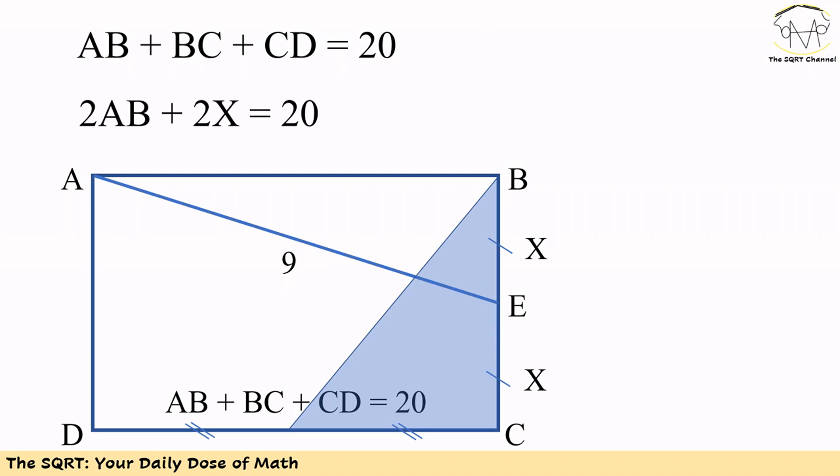We first start with what we know. AB plus BC plus CD is equal to 20, and we know BC is divided into two equal parts. We show them as X here.